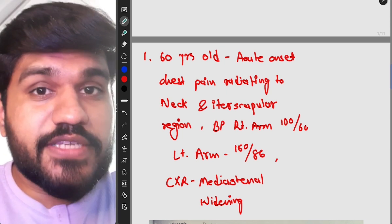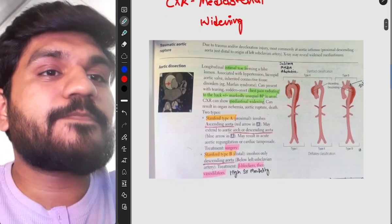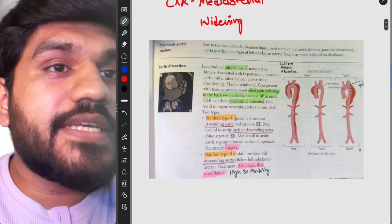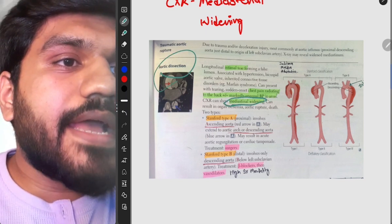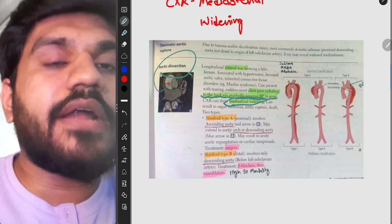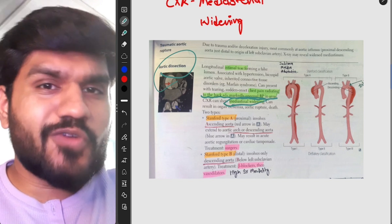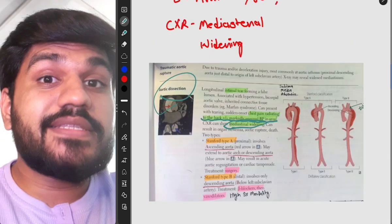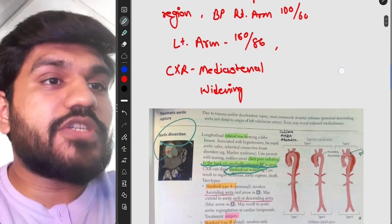So this is a typical case of aortic dissection. In First Aid, aortic dissection is given with mediastinal widening and plus or minus markedly unequal BP in arms. So this is a typical question for aortic dissection and it is solving the question.